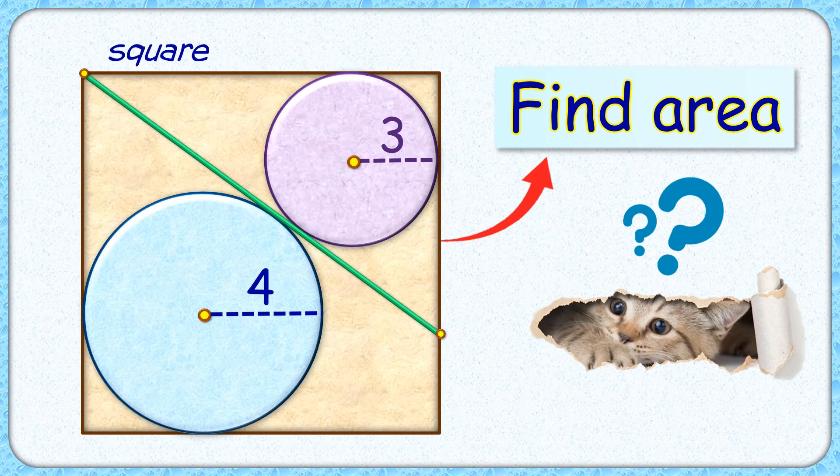Welcome everyone to this interesting question where given to us is a square with a green line segment and two circles inside it. These circles are touching two of the sides of the square and the green line segment. The radius of circles is given as 3 and 4 cm each. The exciting part is with this limited data we have to find the area of the square.